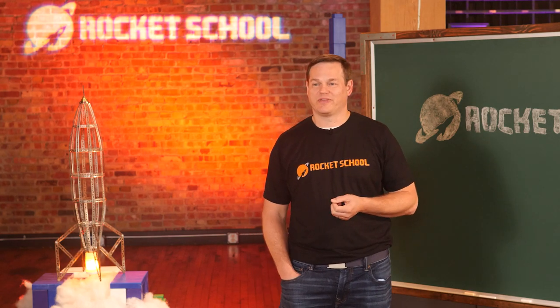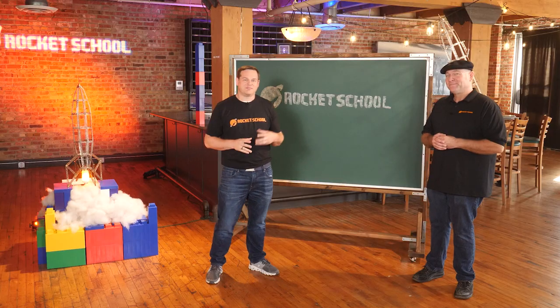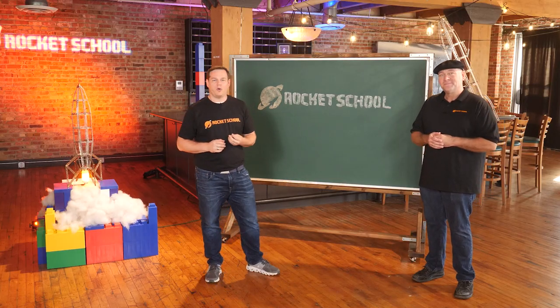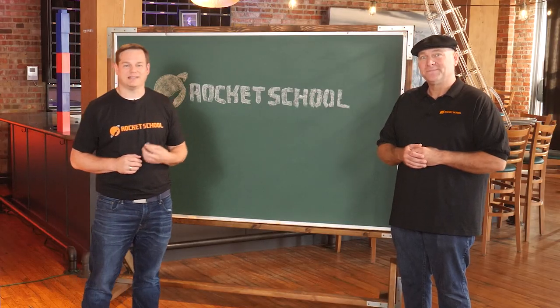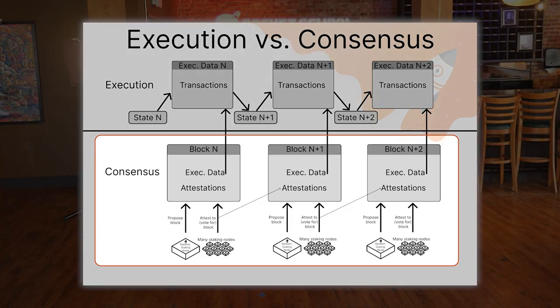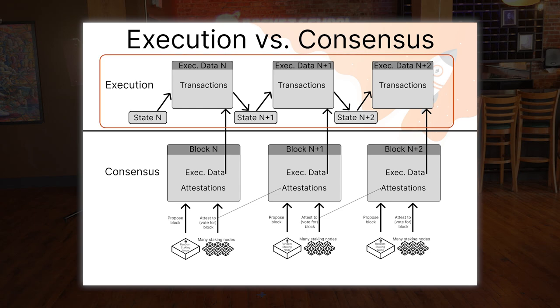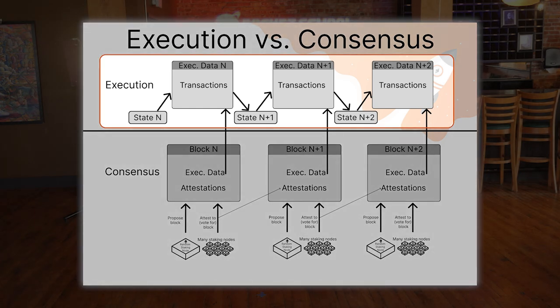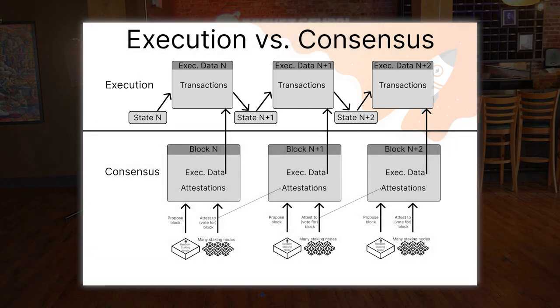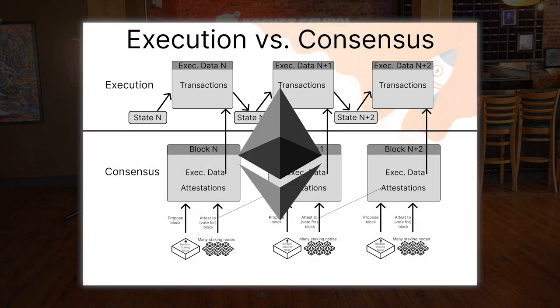This means that people who operate a node and also hold Ether can choose to put it up at stake on the part of the Ethereum network related to consensus, which is called the beacon chain — or the consensus layer — in contrast to the execution layer, where smart contracts and transactions live. Stakers put their Ether at stake like this in exchange for the right to get paid consensus rewards in the form of freshly minted Ether for performing certain duties.